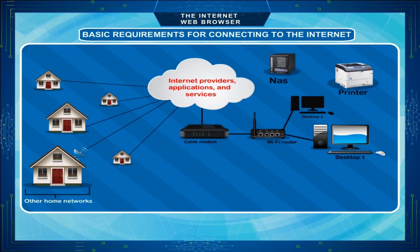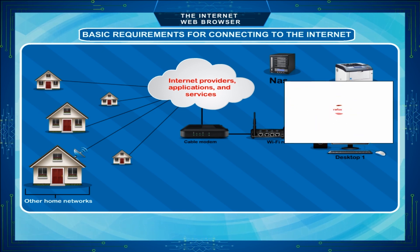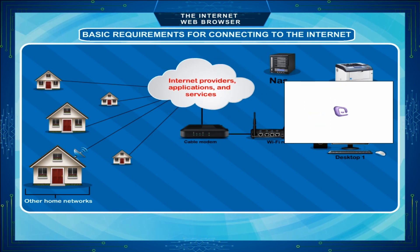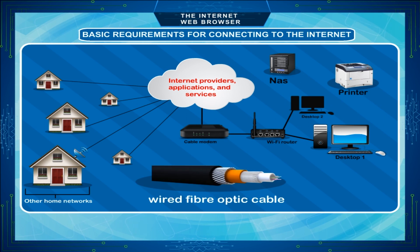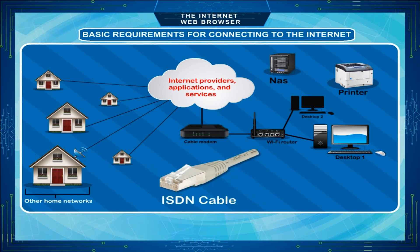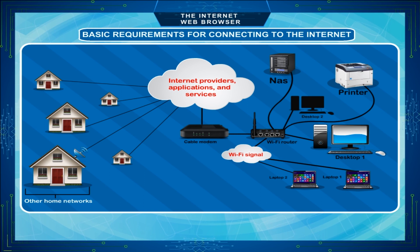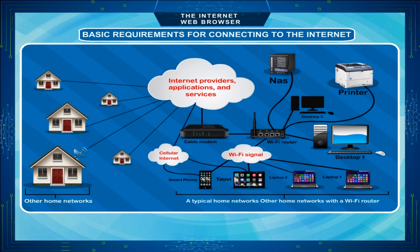In addition, software programs such as internet browsers, email clients, Usenet clients and other special applications are needed in order to access the internet. Nowadays, wired fiber optic cable or ISDN lines are being used along with WLAN or Wi-Fi that offers internet to laptops and several handheld devices such as mobile phones and tablets.